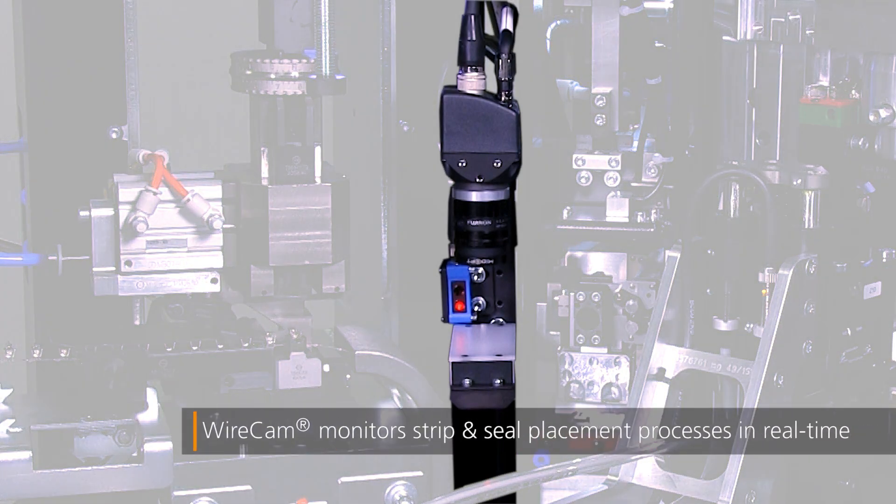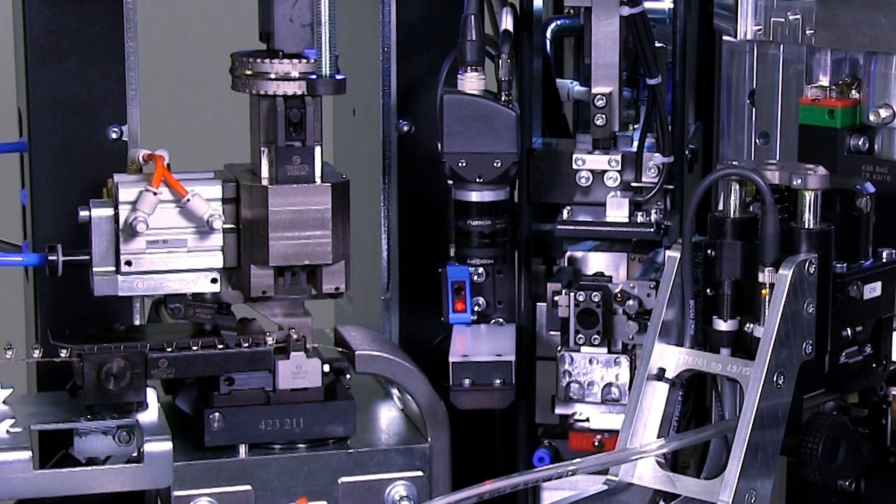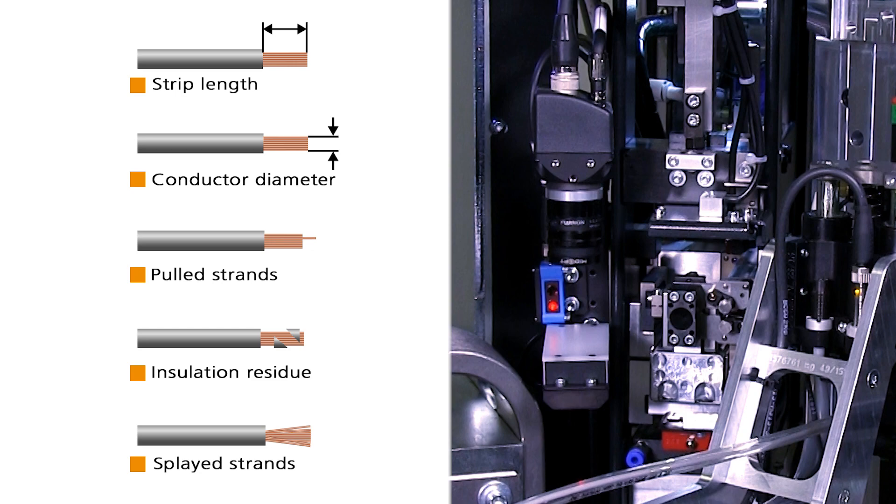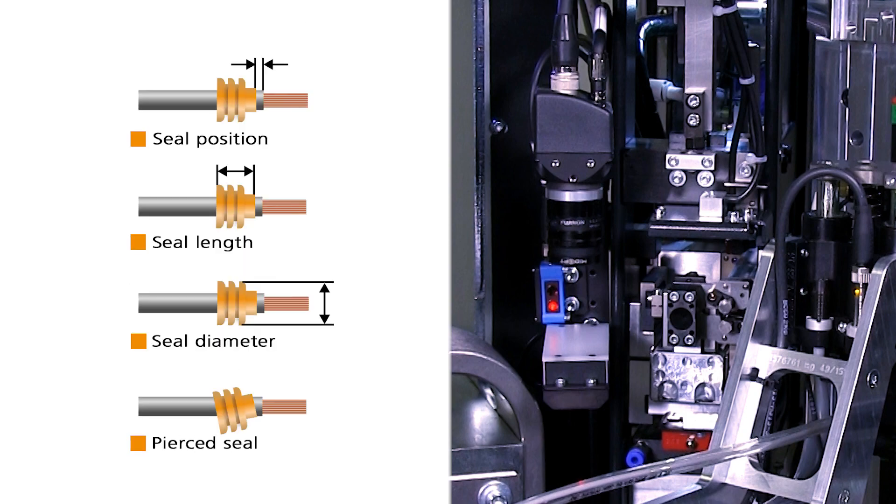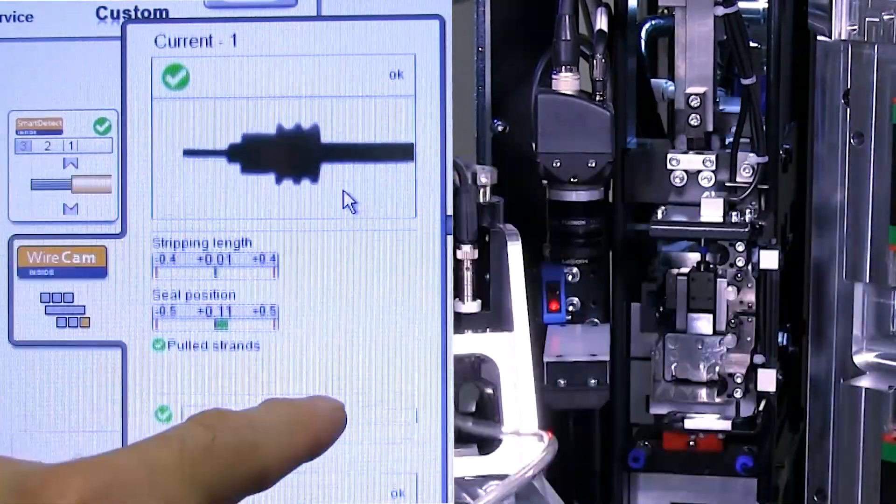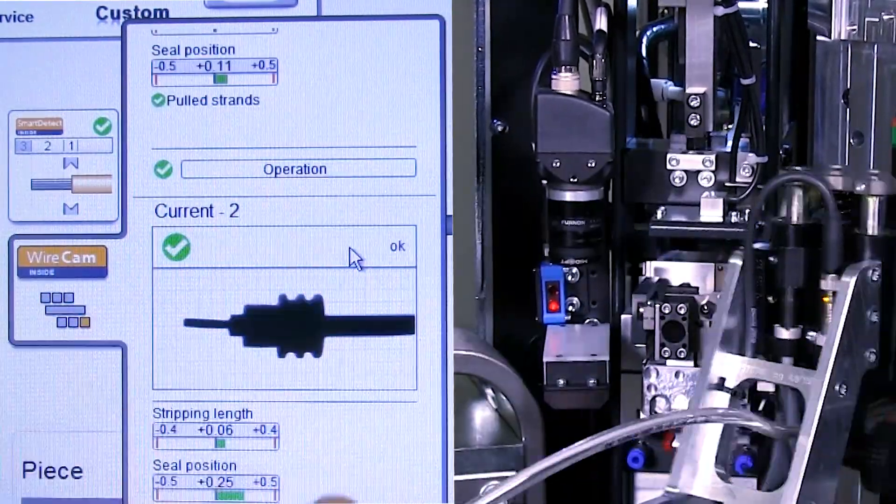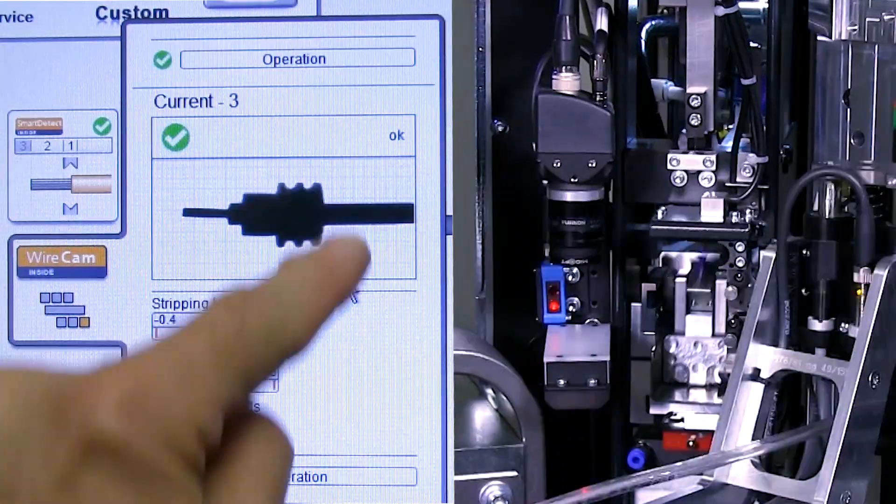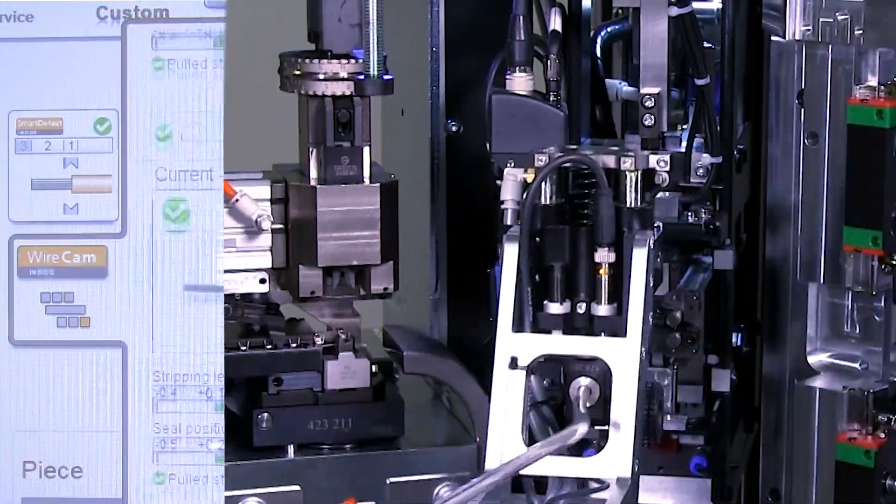The optional wire cam system monitors the stripping results and certain properties of the seal position. A picture is taken of the end of the processed wire as it is in motion or on the fly. Based on a two-dimensional top-view image, the software inspects each individual wire end and compares it with the reference data in real-time.